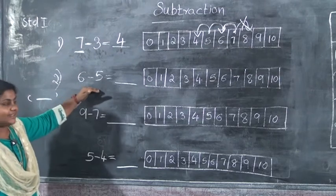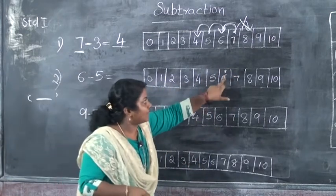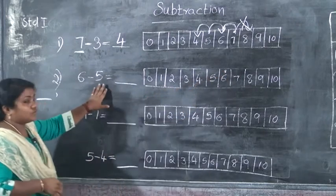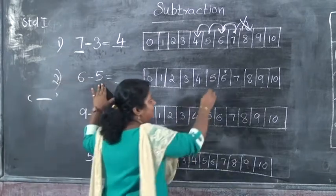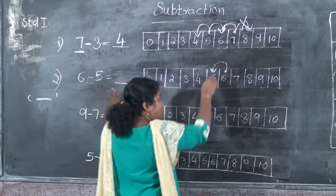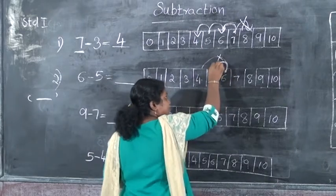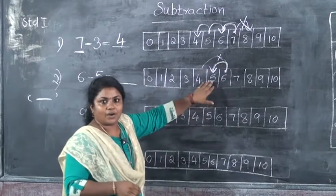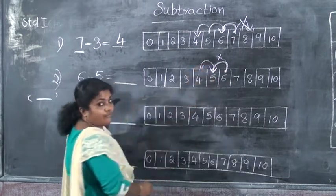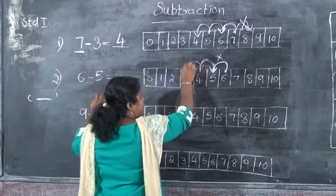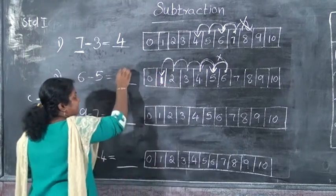The next question is 6 minus 5. We have to put a dot on number 6. We have to jump backward — 5 jumps backward. Don't jump forward; that is wrong. We have to jump to the back side, one column at a time. How many jumps? 5 jumps: 1, 2, 3, 4, 5. We reach at number 1. So the answer is 1.